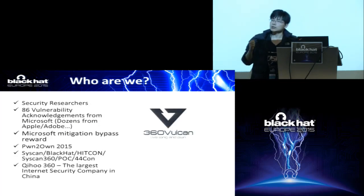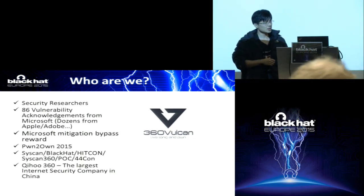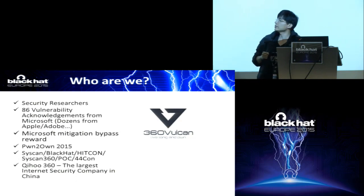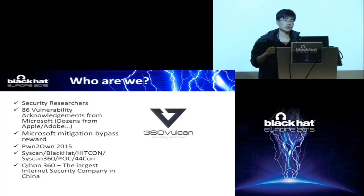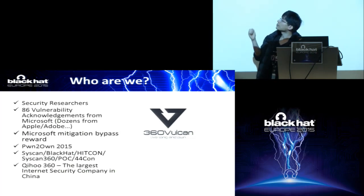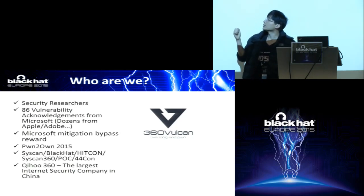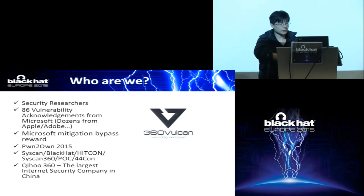We are researchers from the 360 Vulcan team. 360 is the largest internet security company in China. We do security research including vulnerability research, APT detection, and security software development. We have found some vulnerabilities and also attended some mitigation bypass reward programs. We have spoken at several security conferences.